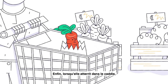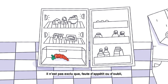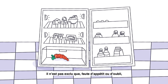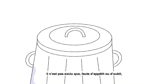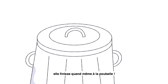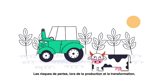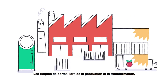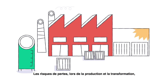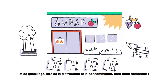Finally, even if the carrot makes it into our shopping basket, it may end up in the trash anyway because of a lack of appetite. There are many ways for loss during production and processing, and waste during distribution and consumption to occur.